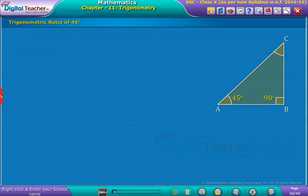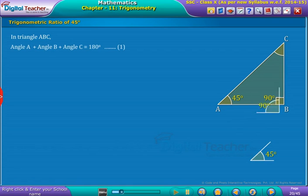Trigonometric Ratios of 45 Degrees. Consider a right angle triangle ABC with right angle 90 degrees at B and acute angle 45 degrees at A. We know that the sum of angles in a triangle is 180 degrees, as shown on screen.